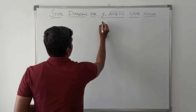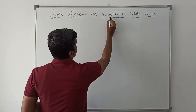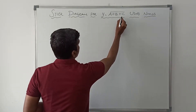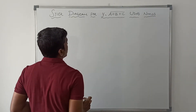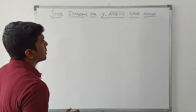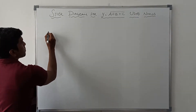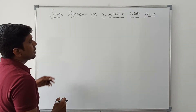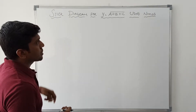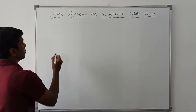The given Boolean expression is Y equal to A plus B plus C, the whole bar. Before drawing the stick diagram, I will first explain the graphical representation of the NMOS stick diagram.